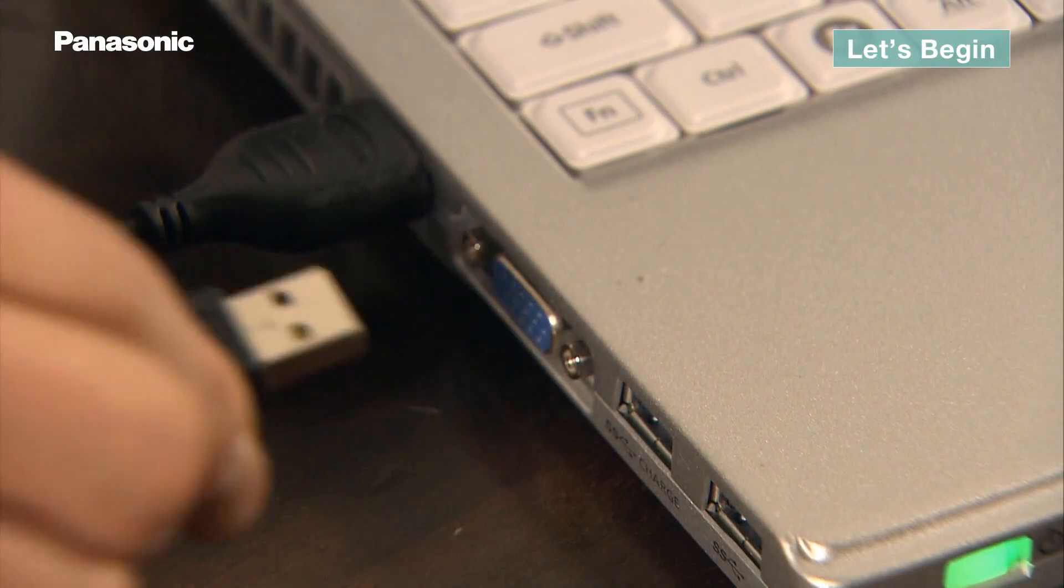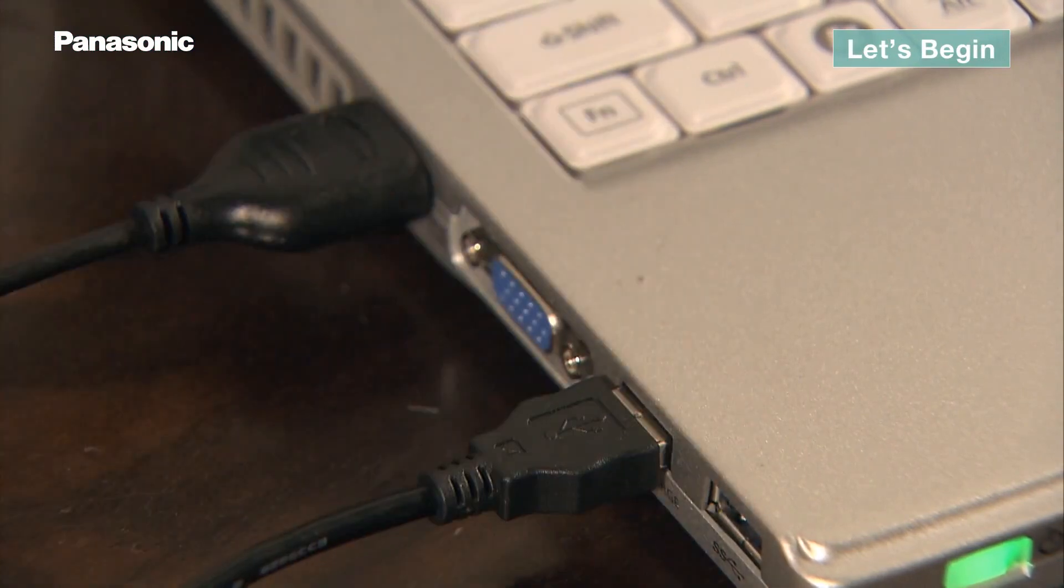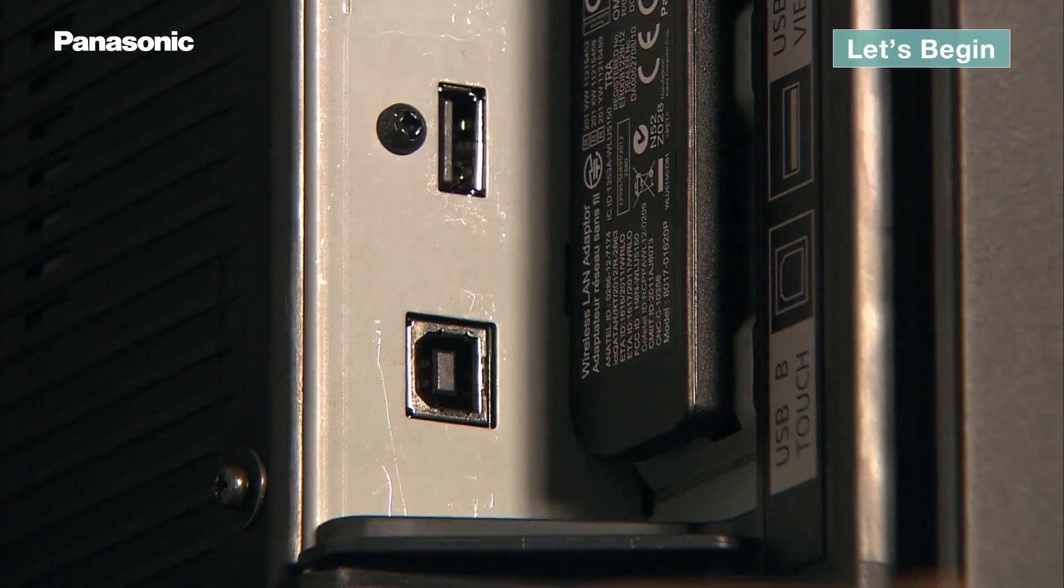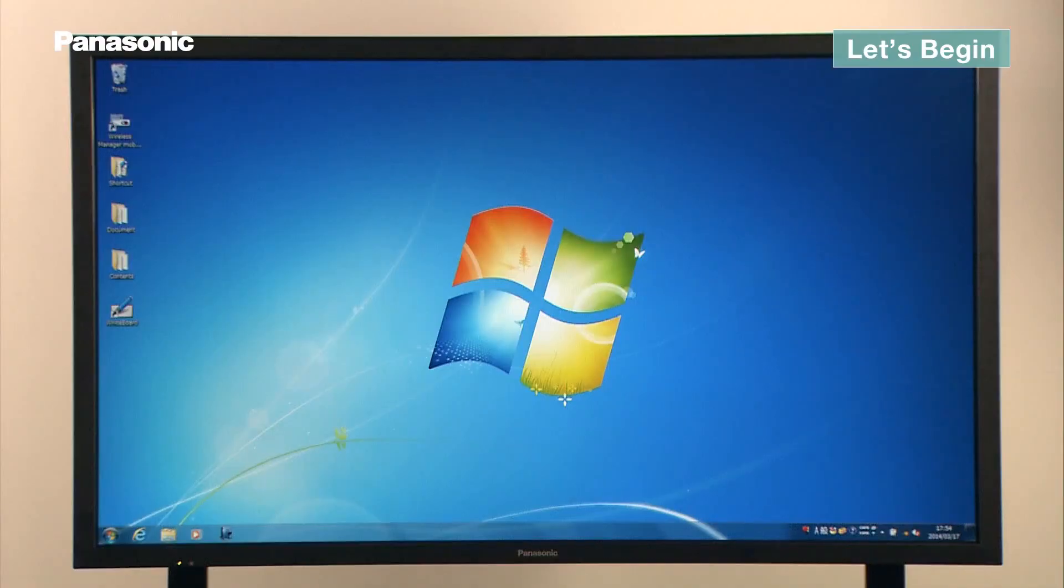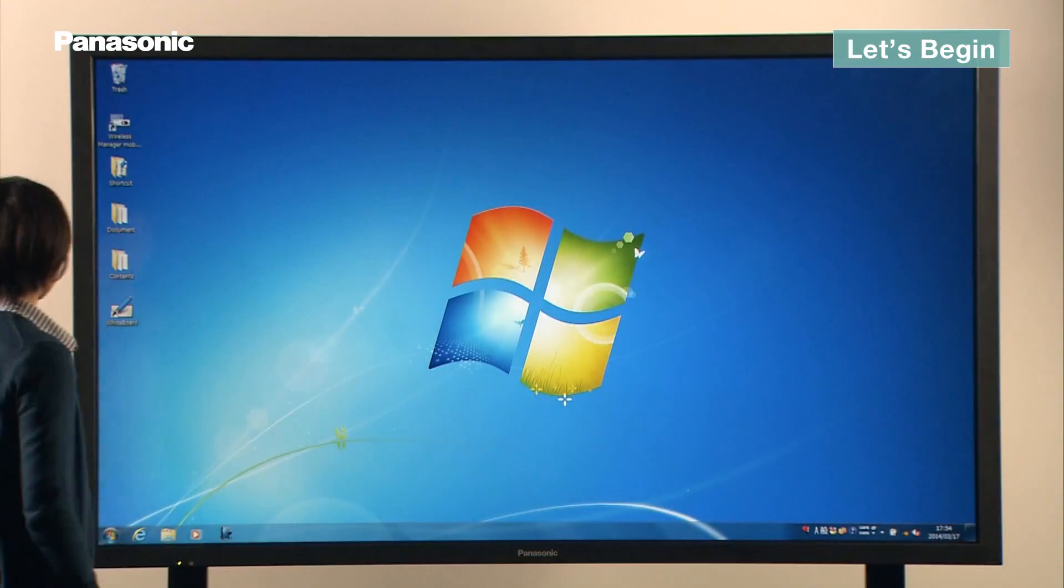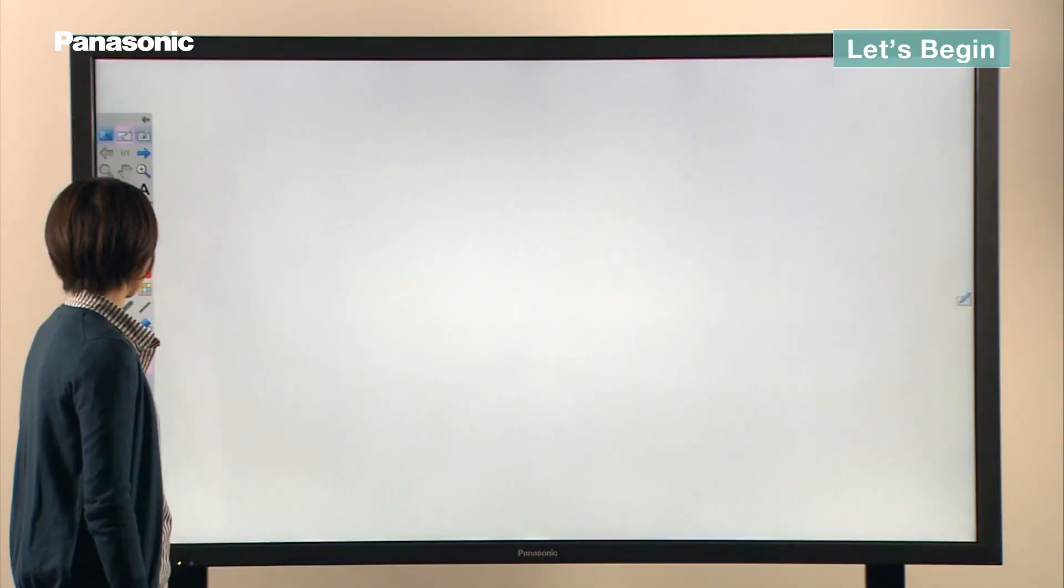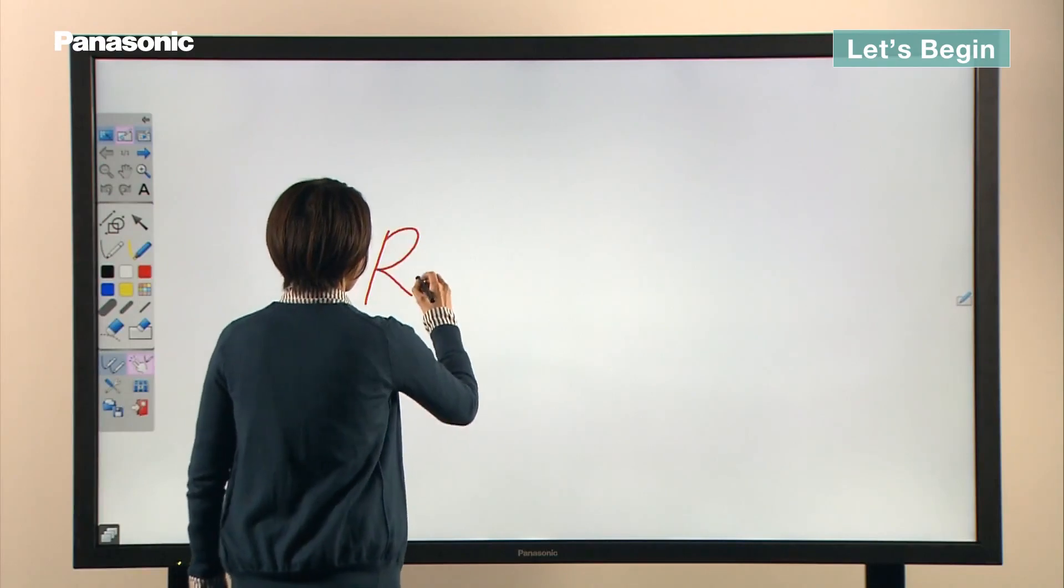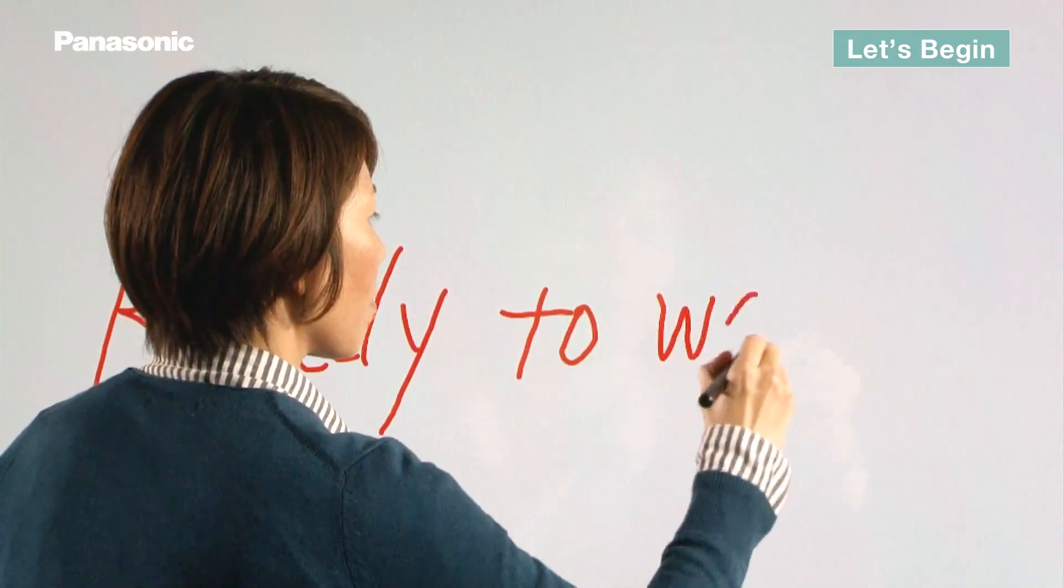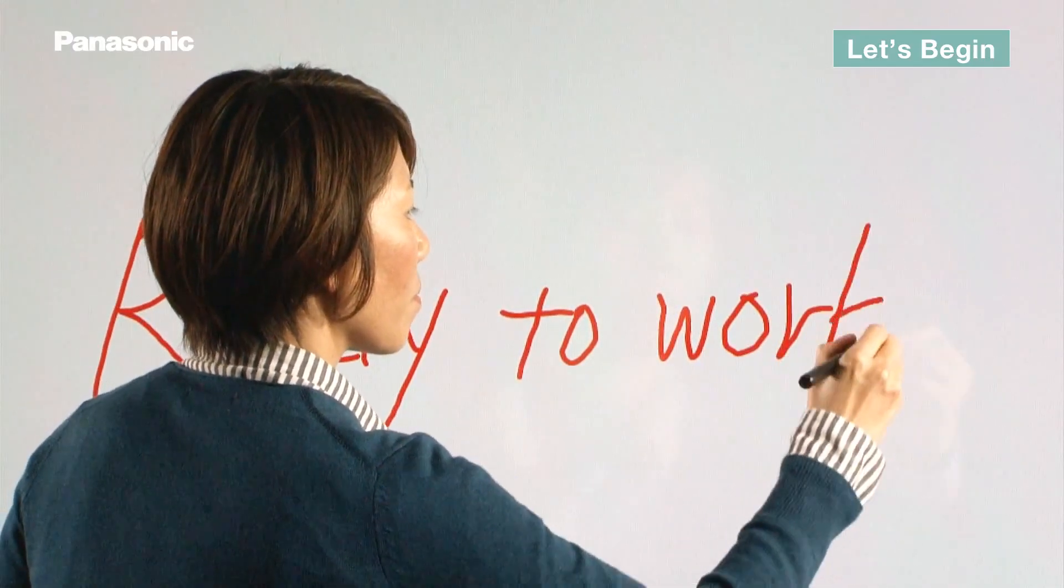To get started, connect the PC with whiteboard software to the display's USB port. Tap the whiteboard software icon to launch the application. The whiteboard interface will appear and you're ready to start work.